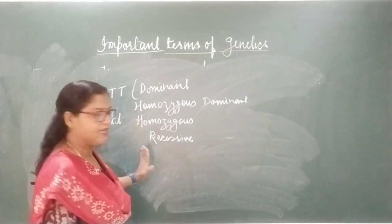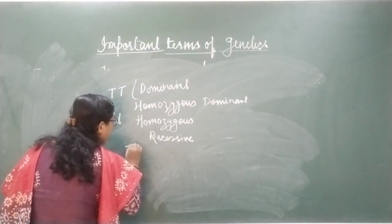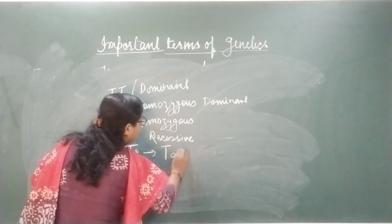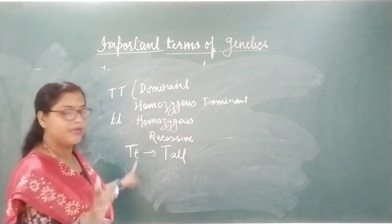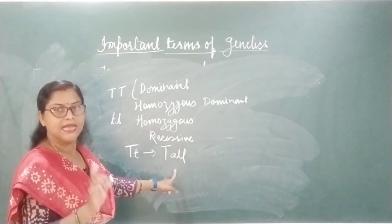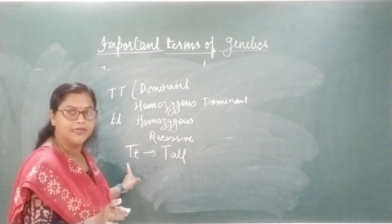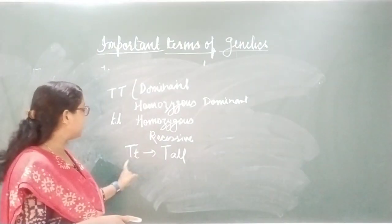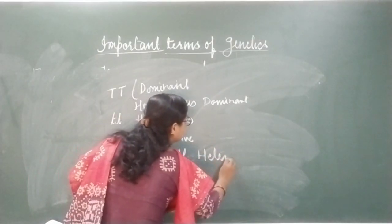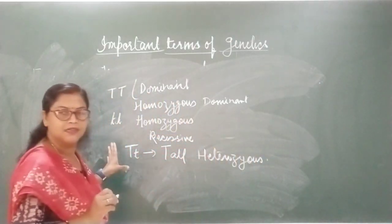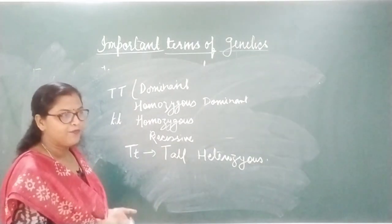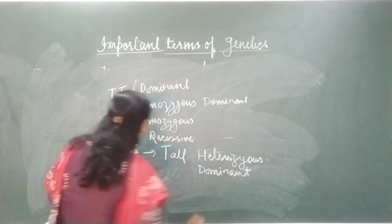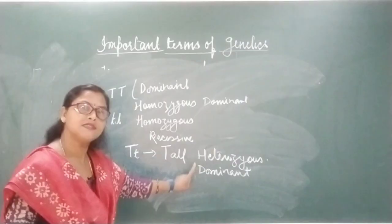If the gene is carrying two different alleles — capital T and small t — then even though one allele is recessive, the plant will still be tall, because the dominant character is expressed. This is called heterozygous. Since the dominant character is seen, we call it heterozygous dominant.